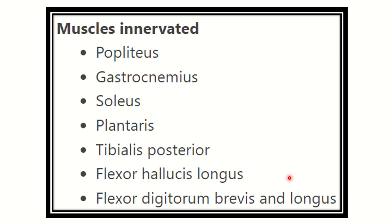In short, regarding muscle innervation by the tibial nerve, here we can see: popliteus, gastrocnemius, soleus, plantaris, tibialis posterior, flexor hallucis longus, and flexor digitorum longus and brevis. This group of muscles is supplied by the tibial nerve.